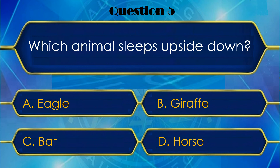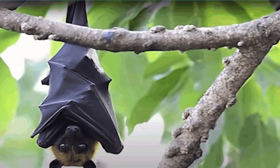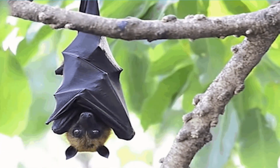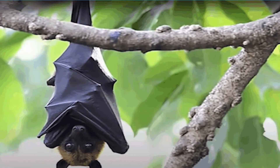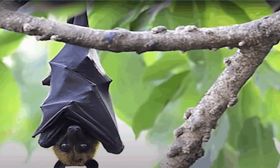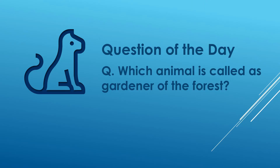C — Bat. Okay, let me check. Yes, bat is the right answer. Friends, bat hi ek aisa animal hai jo ulta hokar sota hai, aur apne pankhon ko as a blanket use karta hai. Aur yahi ek aisa mammal hai jo ud sakta hai.